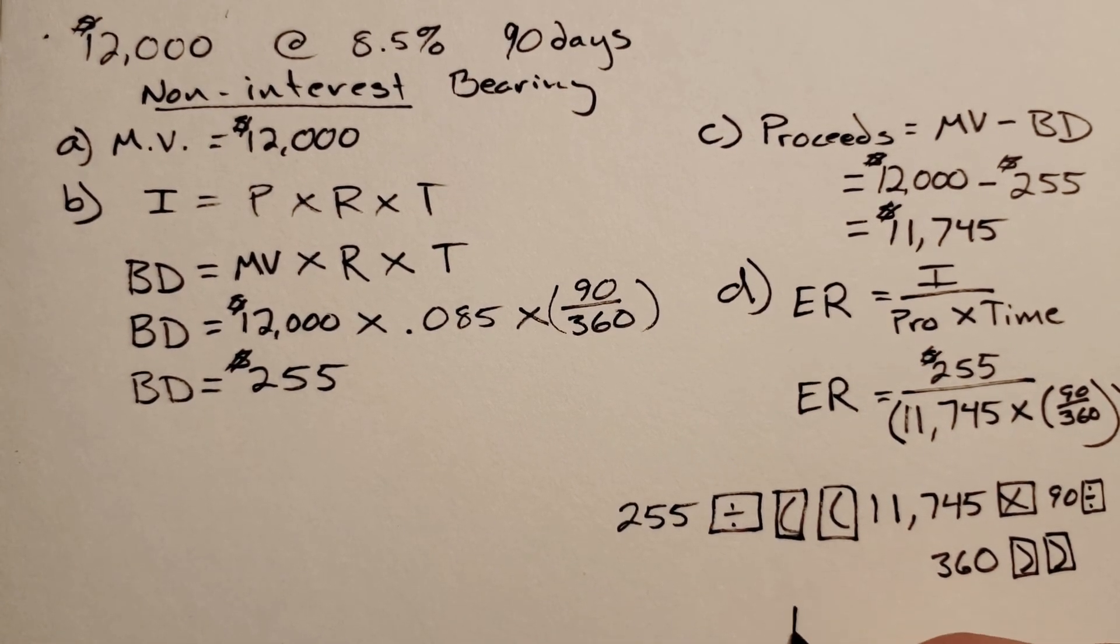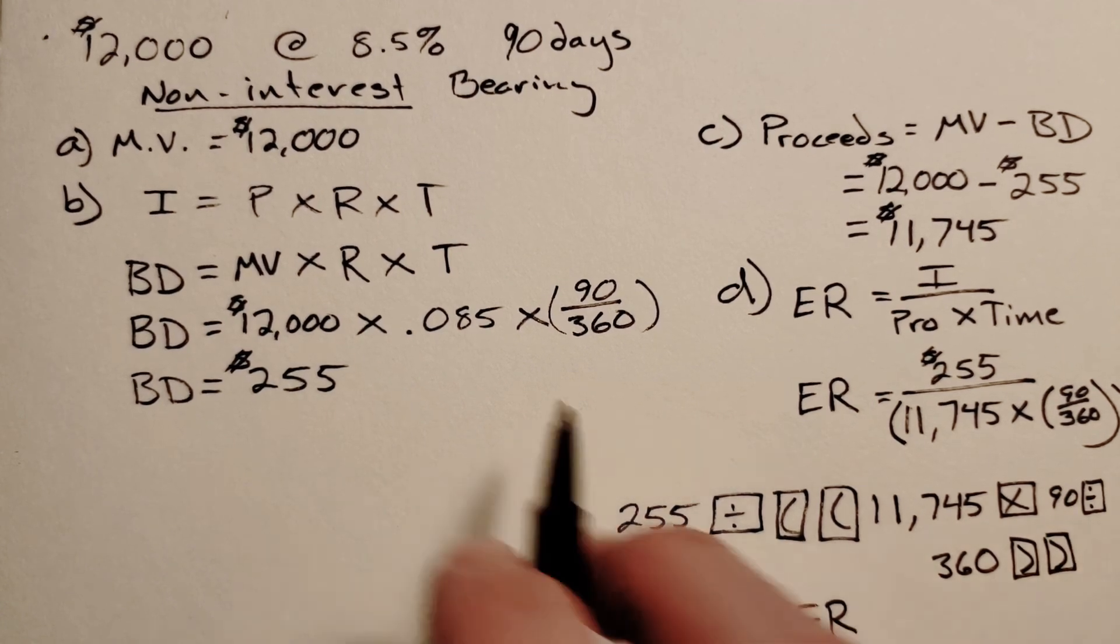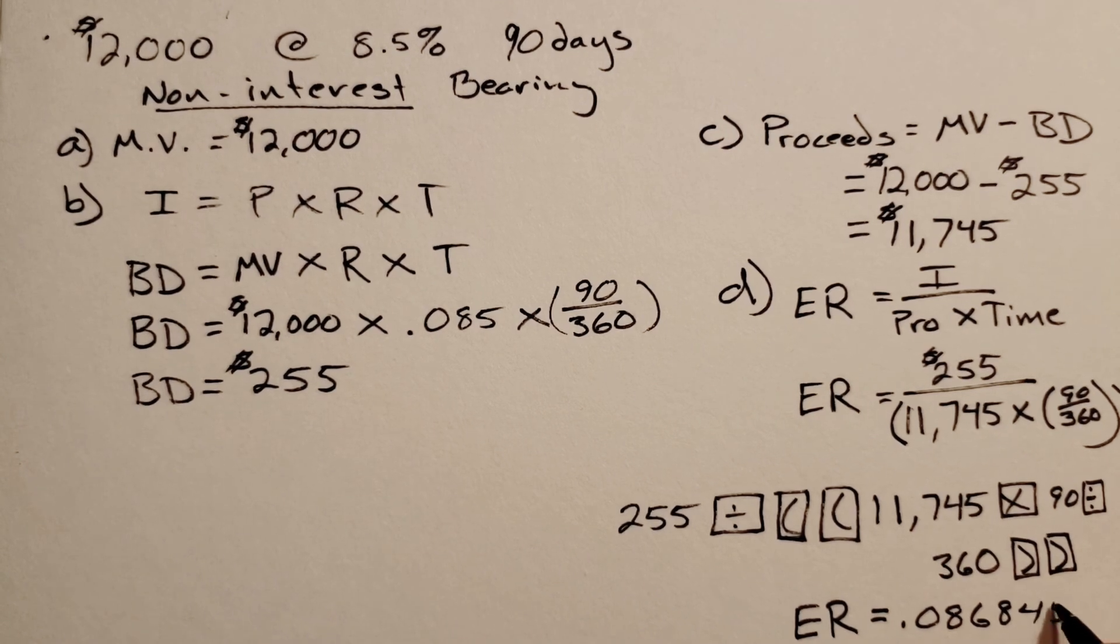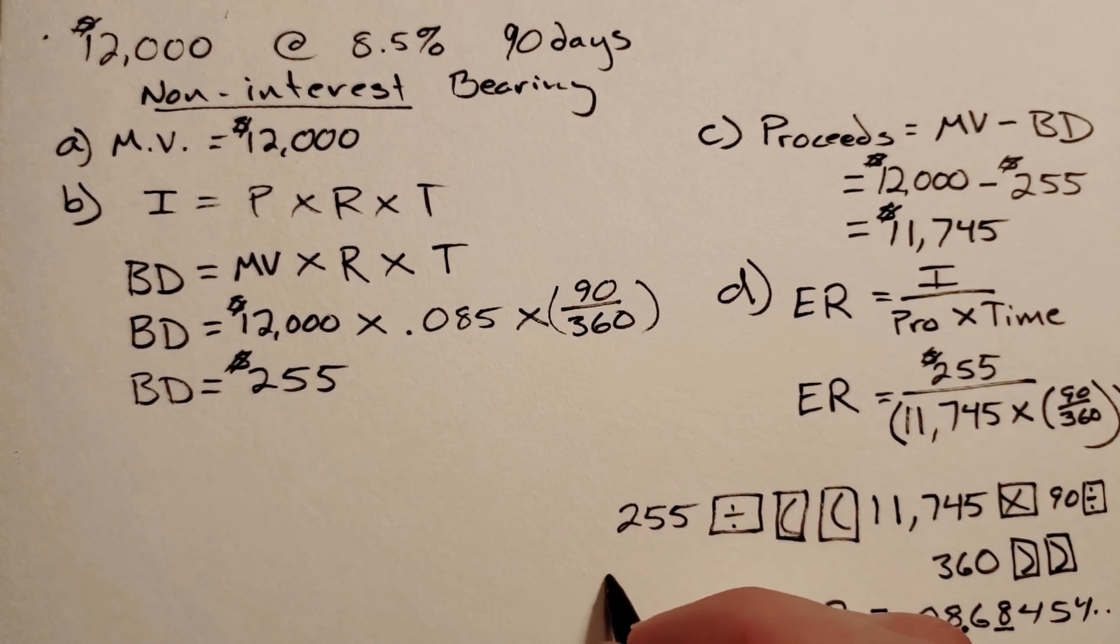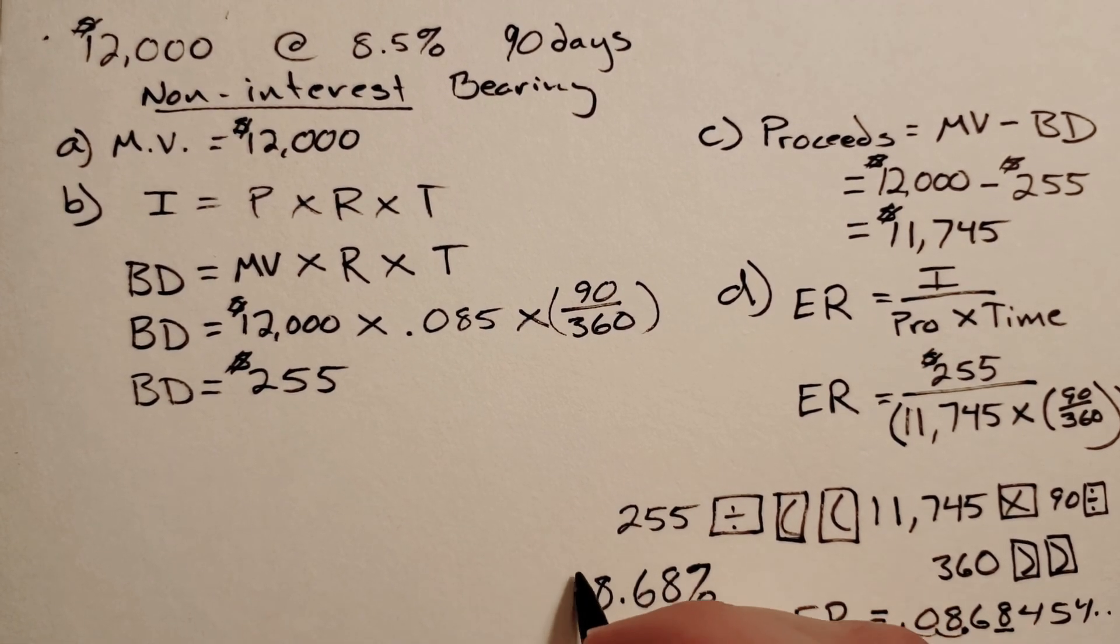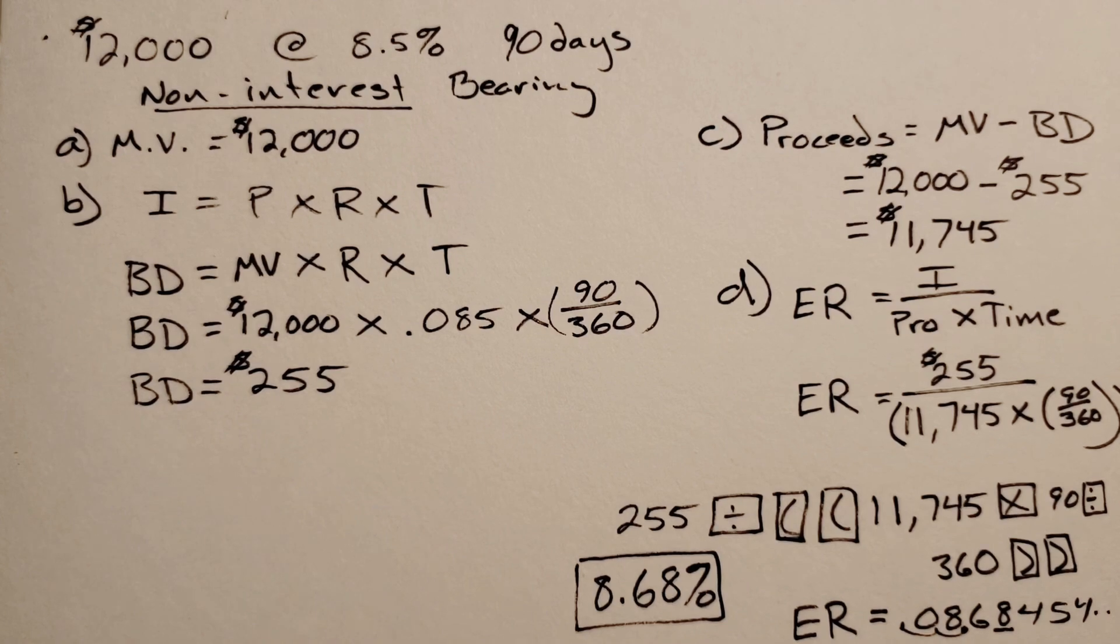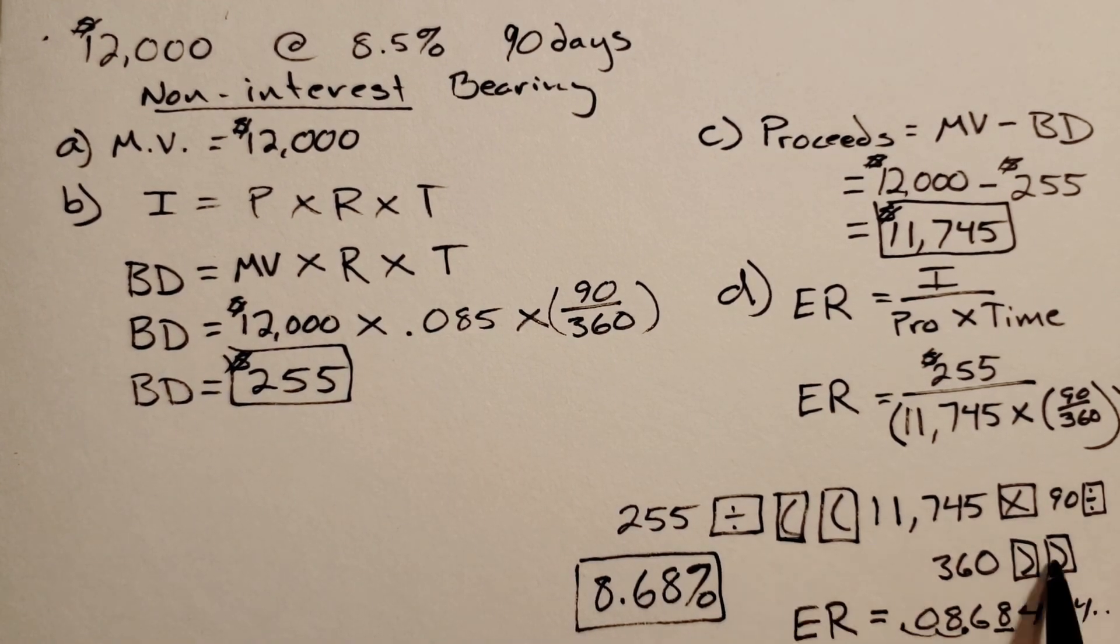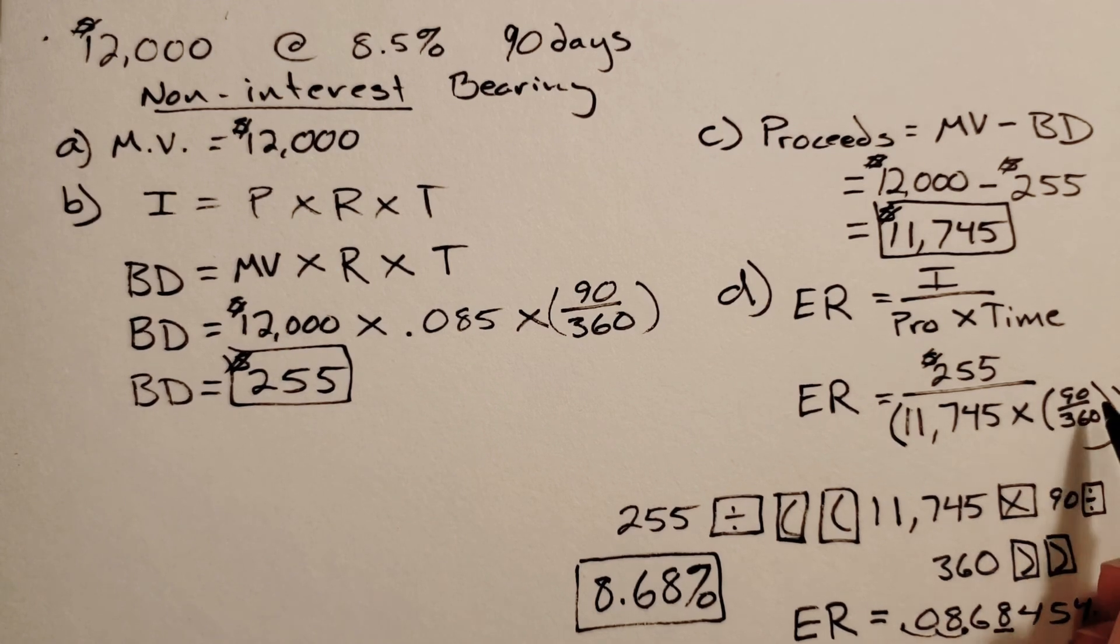If I do that as it's supposed to be, I'll get an effective rate slightly higher than what was stated. Remember it was stated at 8.5%. My effective rate comes out to 0.086845... So we go to the nearest hundredth percent - that's 8.68%. The four comes after it, so my effective rate is 8.68%.